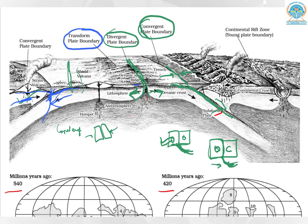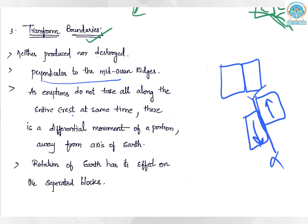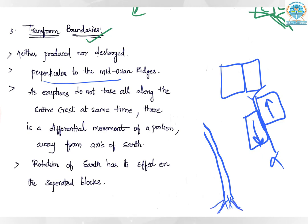Transform boundaries are perpendicular to the mid-oceanic ridges. At the ridge, one plate moves one way and the other moves the opposite way. Because eruptions do not occur along the entire crust at the same time, there is differential movement of portions away from the axis. The rotation of the Earth also has its effect on the separated blocks. Eruptions may happen at one point along the ridge at one time and at a different point later.